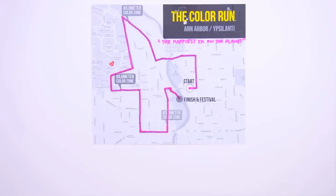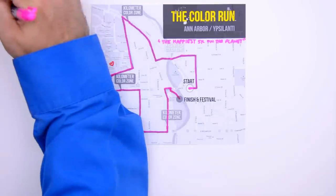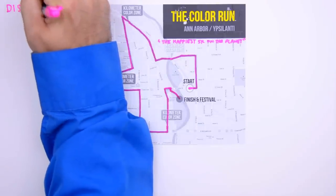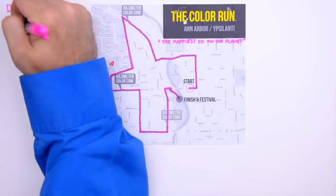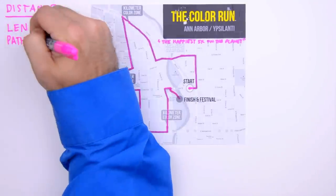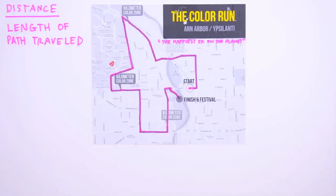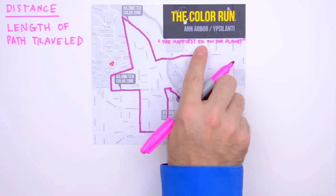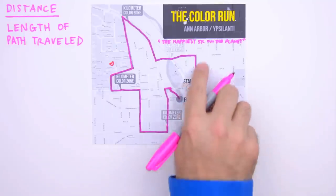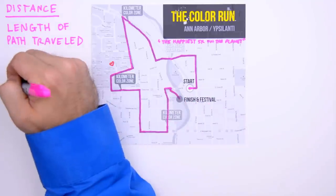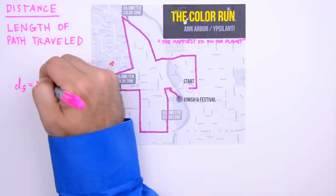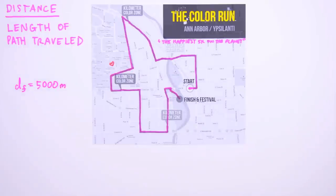We're going to determine a particular runner's average speed and average velocity for their run, but before we do so, we need to understand the difference between two more fundamental quantities: distance and displacement. Distance is simply the length of the path traveled by the body in question — in a car, distance is measured by an odometer. The Color Run is a 5k race; the length of the path traveled from starting line to finish line is 5 kilometers. We'll write this in SI units: final distance, d sub f, equals 5,000 meters.